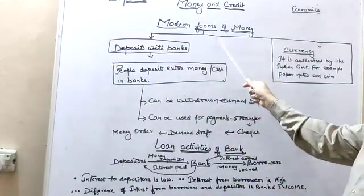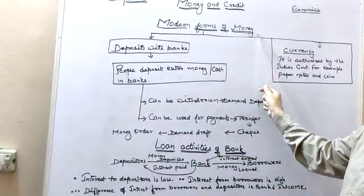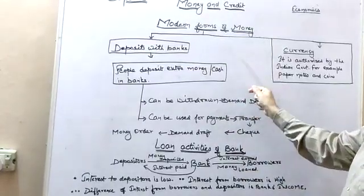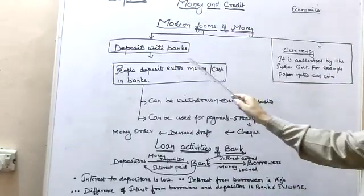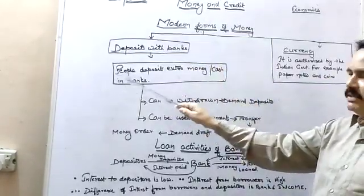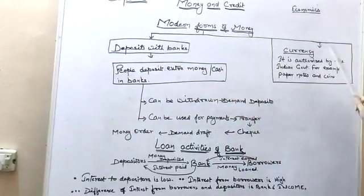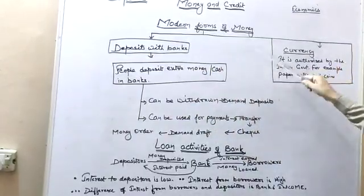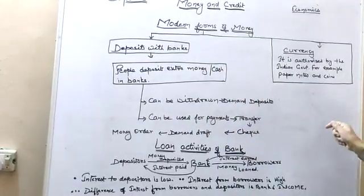Today our new topic is modern forms of money. In that, there are two parts: one is deposits with banks, and the second one is currency. You are all well aware of the word currency — it is authorised by the Indian government and includes paper notes and coins.